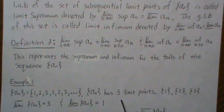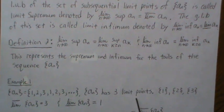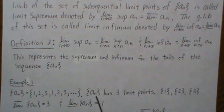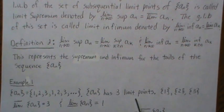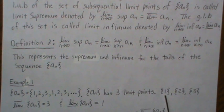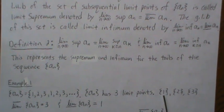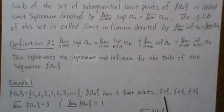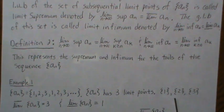In the Bolzano-Weierstrass theorem video I put out, I define the limit point, sometimes called an accumulation point or a cluster point. Clearly AN has no limit, because it bounces around from 1, 2, 3, 1, 2, 3. But it has three limit points. What that means is if we put a little interval around 1, no matter how small — say epsilon — then this sequence is going to be within that interval infinitely many times, and the same is true for 2 and 3. So these are called limit points or cluster points.